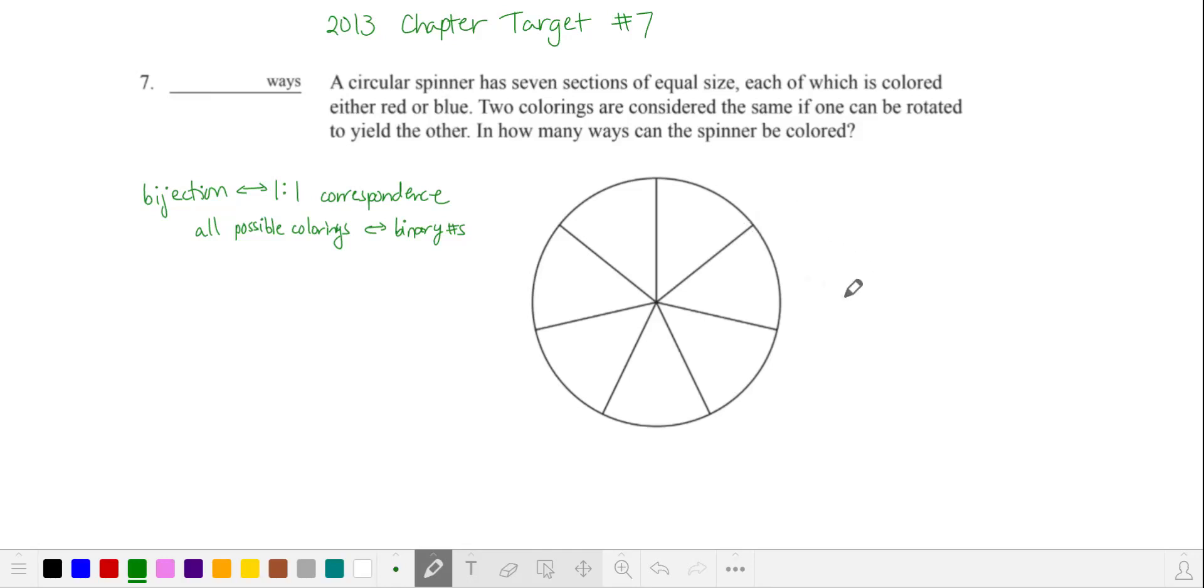I've been receiving a lot of requests for this problem and I think it's an interesting one. It can be solved by looking for a bijection. A bijection is just a one-to-one correspondence between the things that you're trying to count and something that might be easier to count.